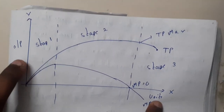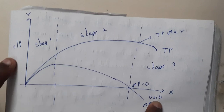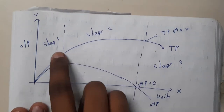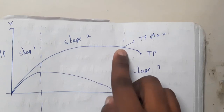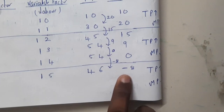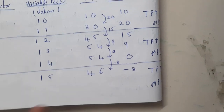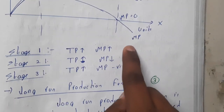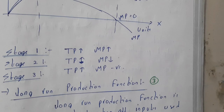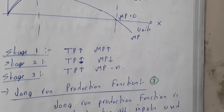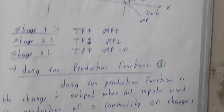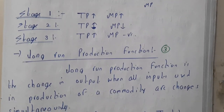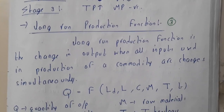The x-axis represents units of variable input (labor) and the y-axis represents output. There are three stages labeled on the graph for TP and MP. At the boundary of stage 2 and 3, TP reaches its maximum because MP has fallen to zero and then goes negative. In the next lecture we will go through the long run production function. Thank you for watching.